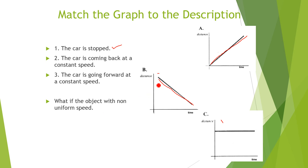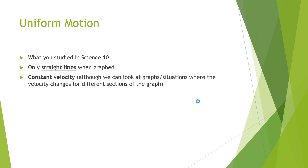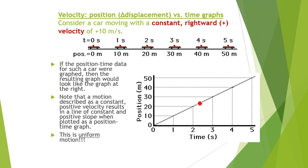Now, what if the object has a non-uniform velocity or non-uniform speed? Then these lines will not be straight — they will be curved. So if the line is curved, the speed is not uniform.